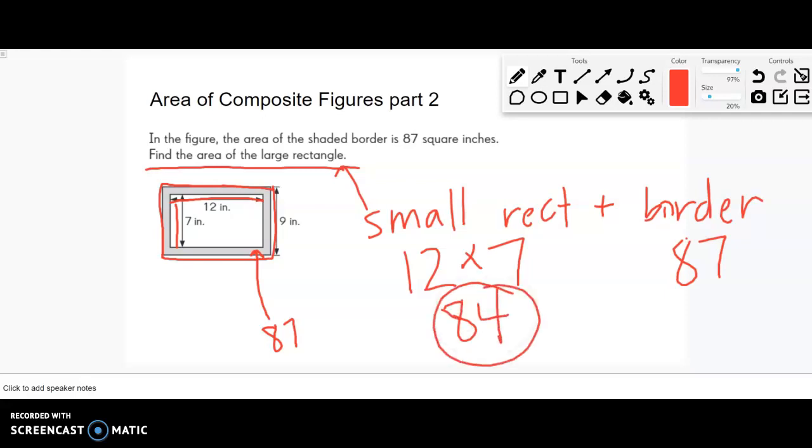So I know the small rectangle is 84, the border is 87, so to find the area of that larger rectangle I can add those together. It's all about figuring out what they're asking for, what you know, what you're missing, and how you can figure it out. That changes based on the situation. 84 plus 87 would be 171 square inches. That 9 in this case was just extra information that I didn't actually need.